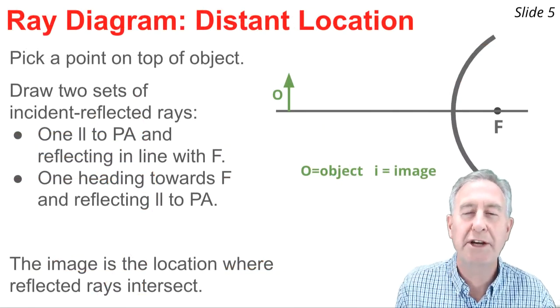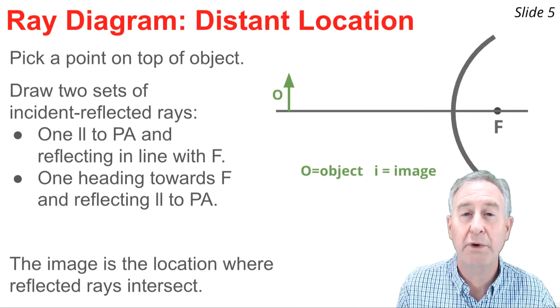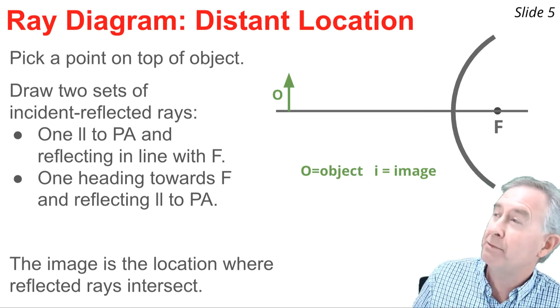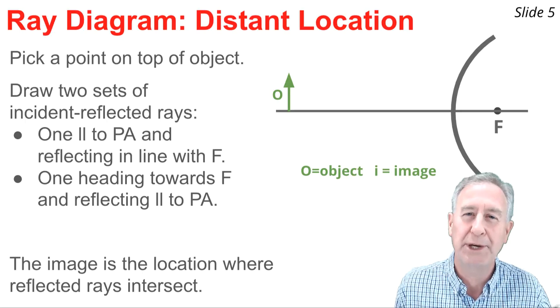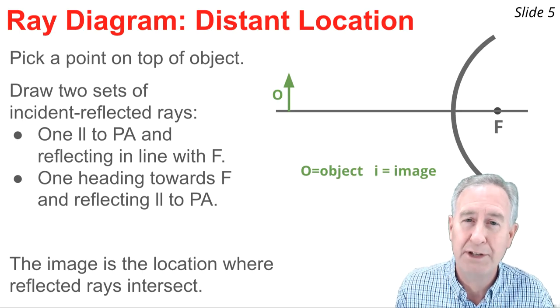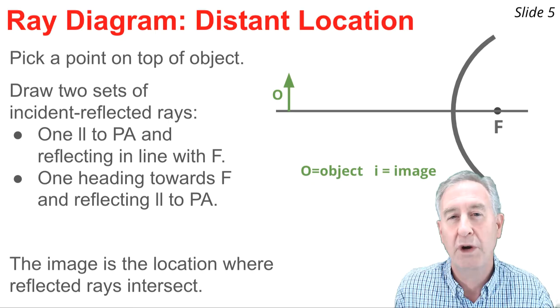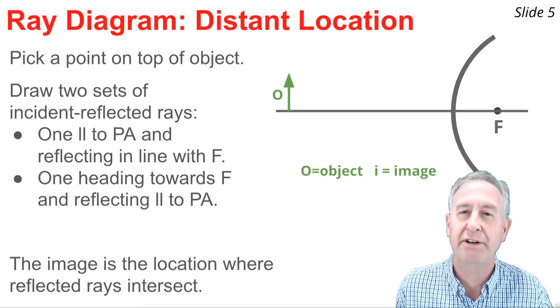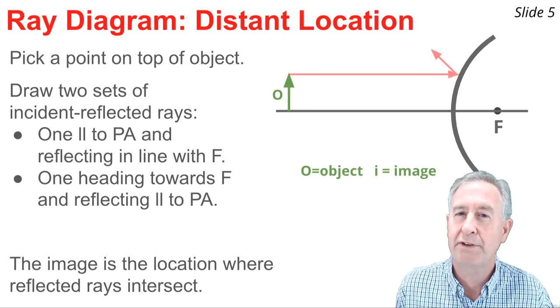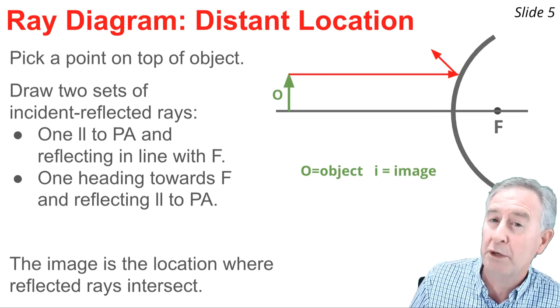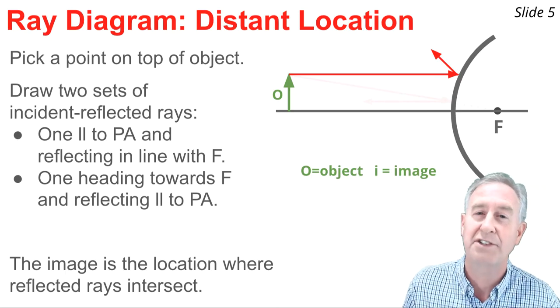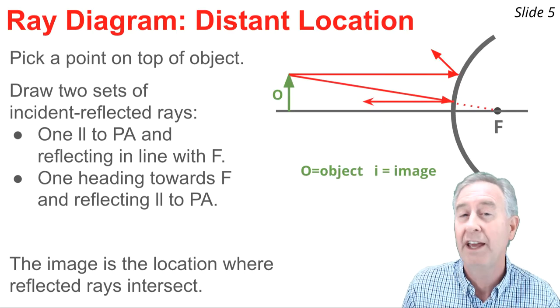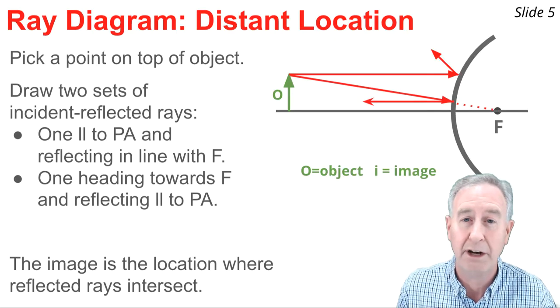I can use these two special rules of reflection to construct a ray diagram for an object placed some distance from a convex mirror. The process begins by picking a point on top of the object in order to determine the image of this point. Then draw two sets of incident and reflected rays towards the mirror. Here's the first one. It's traveling parallel to the principal axis and it reflects in line with the focal point. The second set starts with an incident ray heading towards the focal point on the opposite side of the mirror.